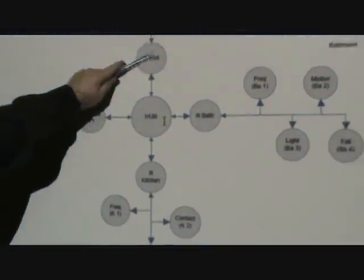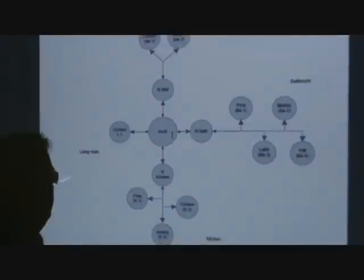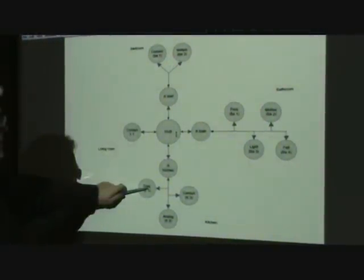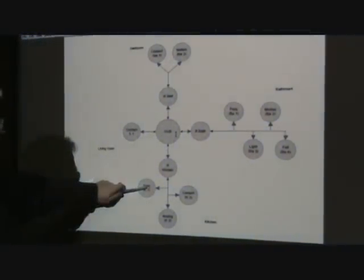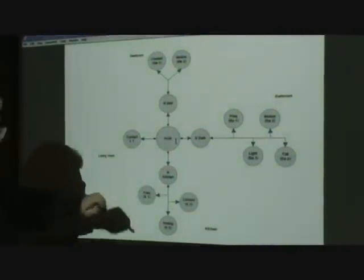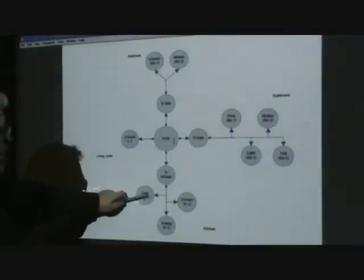See the relay bath, relay bed, relay kitchen. In this case the hub is listening for a different number to be transmitted from the frequency counter on the fridge. So every time the door opens that number would change and increment by one.